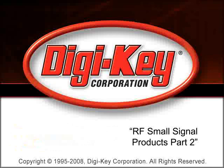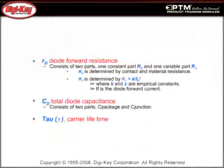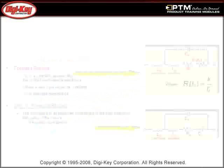The RF Small Signal Products Part 2 Product Training Module, provided by Digikey and NXP, reviews NXP's line of PIN and varactor diodes. Learn about key parameters when selecting a PIN diode and why each is important. Understanding the common parameters and uses of these products will help speed design time and improve design efficiency.